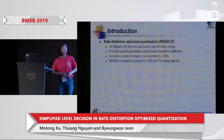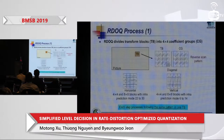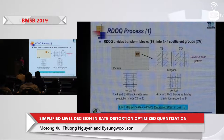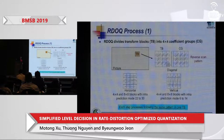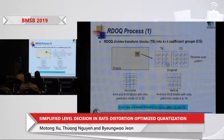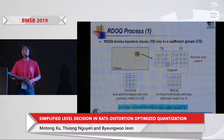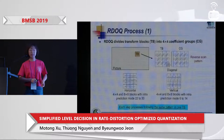RDOQ is claimed to provide around 3.4 to 5.7 percent coding gain. In this process, RDOQ first divides the transform blocks into several 4×4 coefficient groups (CGs). One of three reverse scan patterns — diagonal, horizontal, or vertical — is chosen; the diagonal direction is dominantly used, while vertical and horizontal are used only for small blocks encoded using specific intra prediction modes. Each internal step inside RDOQ is processed following the same scan order.